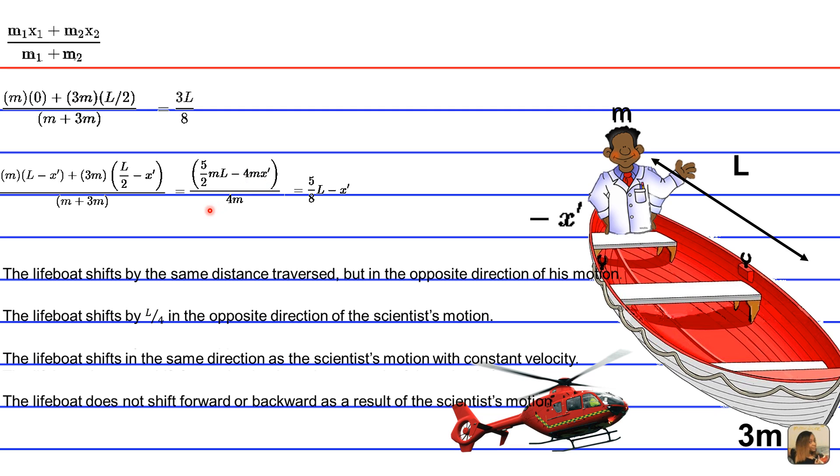And just in case you don't know how this simplifies, we can distribute the m's and combine like terms. And that's going to give us 5 over 2mL minus 4mx prime over 4m.